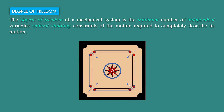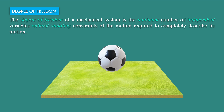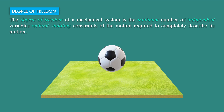Now if we consider the striker of a carom board, then the striker has two degrees of freedom, as the striker can move along the X-axis as well as the Y-axis. If we consider a football in space, then it has three degrees of freedom, as the football can move along the X-axis, along the Y-axis, and along the Z-axis. So the football has three degrees of freedom.